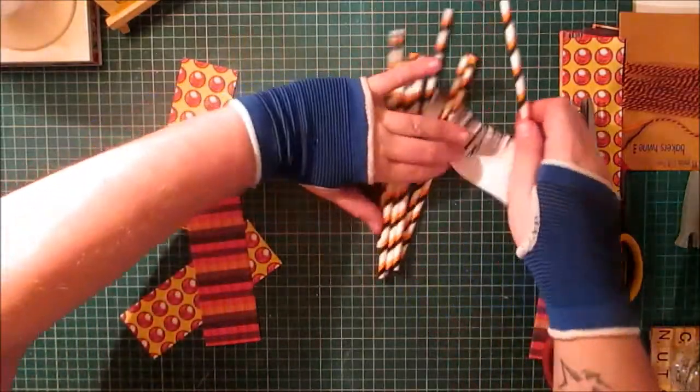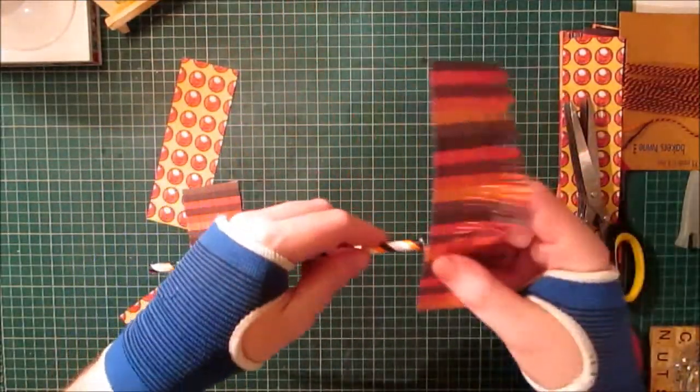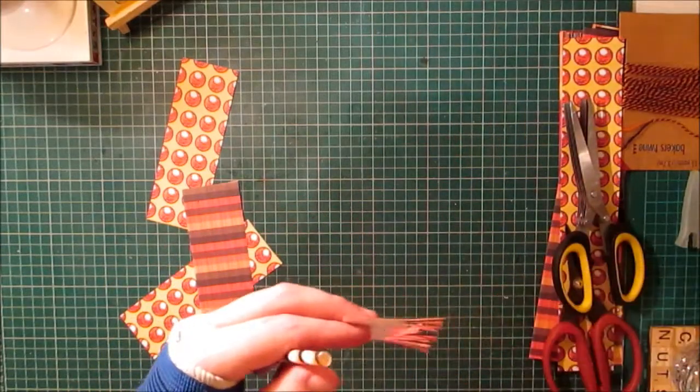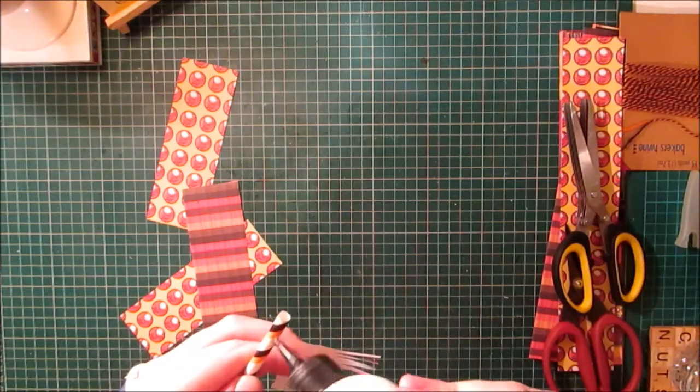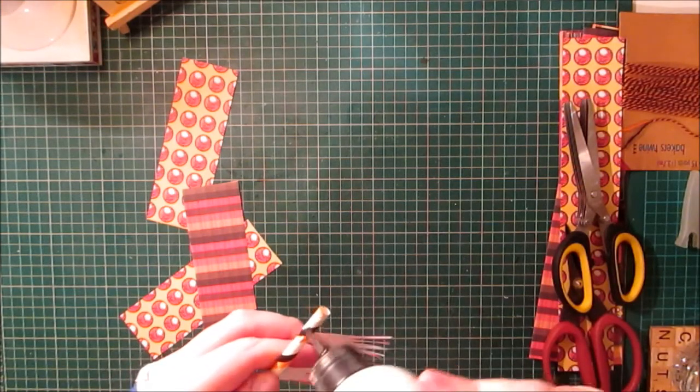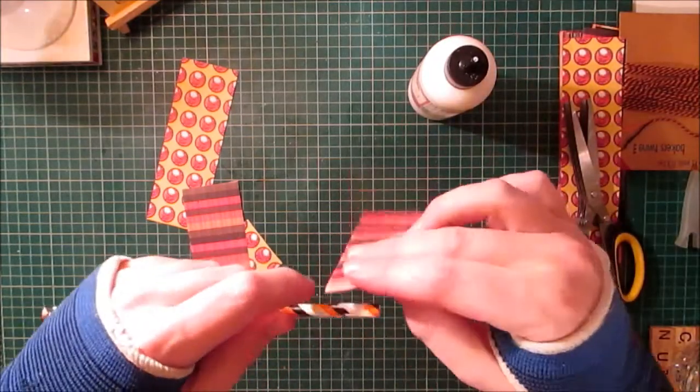Now with your straw, obviously the end without the hole, I'm going to use some art glitter glue. Put some art glitter glue on my straw, put the paper on.